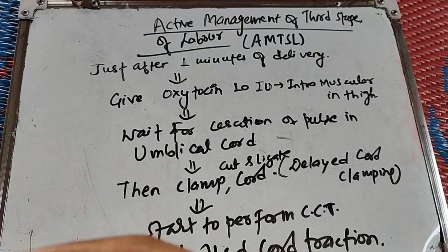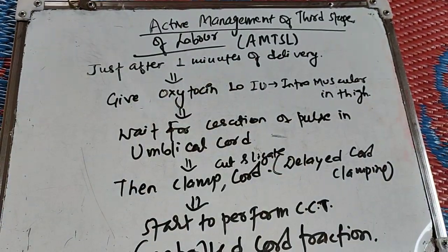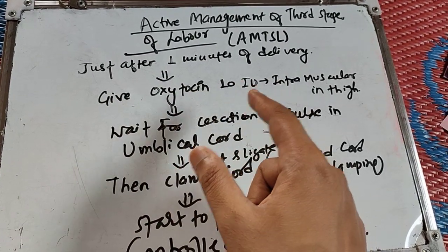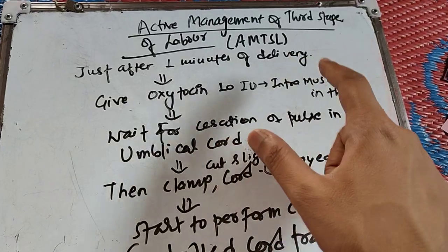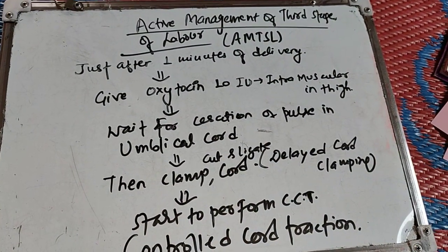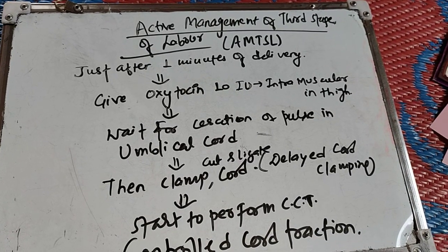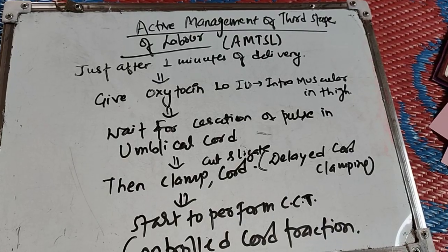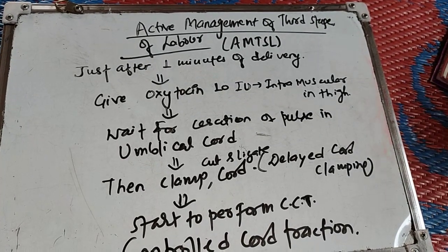Now let's discuss active management of the third stage of labor (AMTSL). Within 1 minute of delivery, give oxytocin 10 international units intramuscularly in the thigh. Oxytocin is the uterotonic of choice.